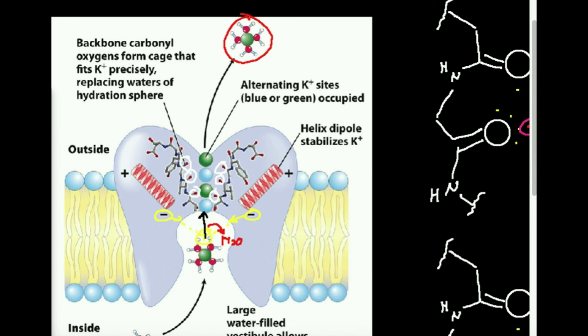Ultimately, potassium is hydrated, it moves into this water channel, gets dehydrated, and moves through the channel through these carbonyl oxygens which stabilize it. The helix dipole negative charge also helps orient the potassium up to the carbonyl oxygens. Once it passes through, it gets rehydrated on the other side. This is how the potassium channel works. Other channels may work a little differently, but it all comes down to the energy of moving through and what's most thermodynamically favorable. Thanks for watching — make sure to like this video and subscribe to the channel.